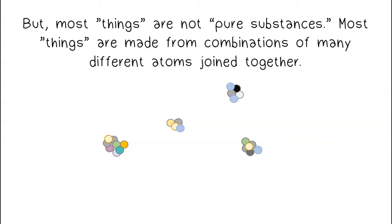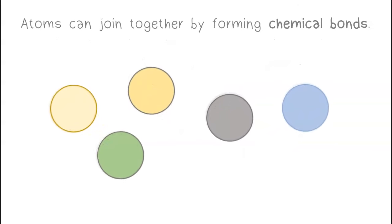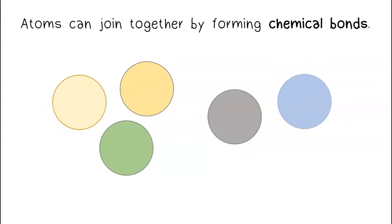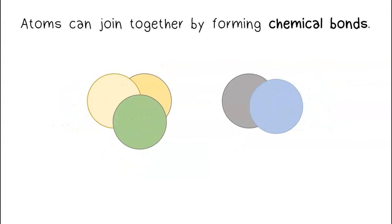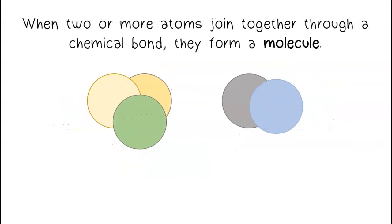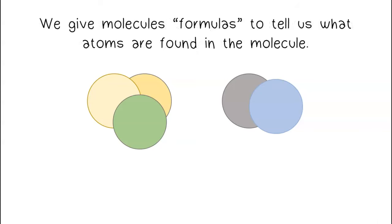But most things are not pure substances. Most things are made from combinations of many different atoms joined together. Atoms can join together by forming chemical bonds. When two or more atoms join together through a chemical bond, they form a molecule.